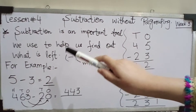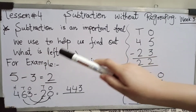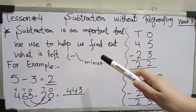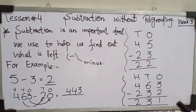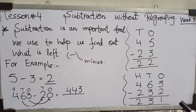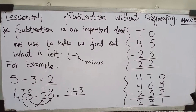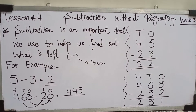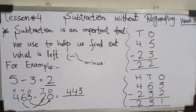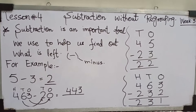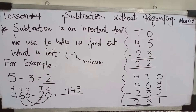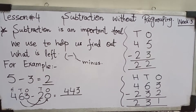Subtraction is an important tool we use to help us find out what is left — یعنی کہ آپ subtraction کیوں کرتے ہو، کہ آپ کے پاس کتنے left رہ جائیں گے۔ For example، آپ کے پاس 5 balloons ہیں اور اس میں سے 2 balloons آپ نے اپنے friend کو دے دیے — how many are left? آپ کے پاس 3 left ہو جائیں گے۔